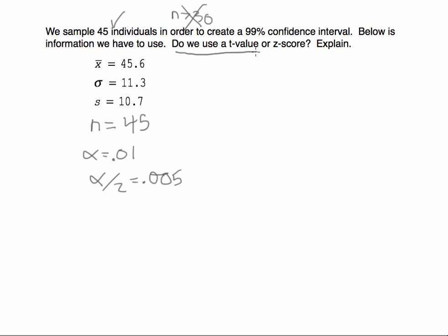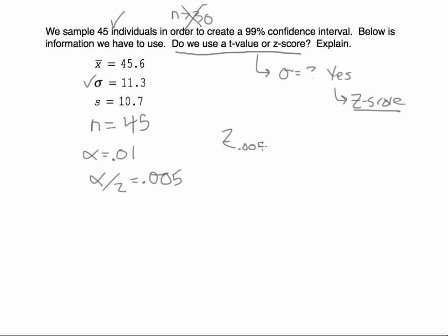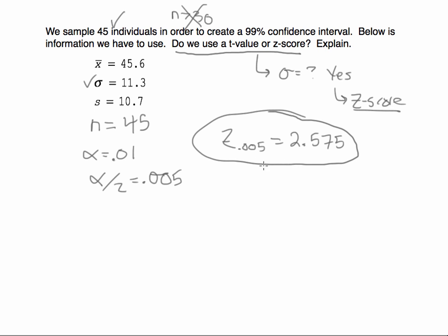Now, do we use a t-value or a z-score? The question to ask is: do we know the population standard deviation? In this case, yes we do. So we are going to use a z-score. For a 99% confidence interval, a z-score with 0.005 in each tail gives us 2.575. You might remember that from when we were estimating population proportions and creating confidence intervals with the population standard deviation known.